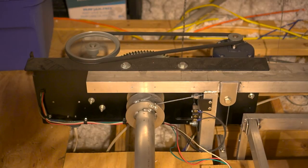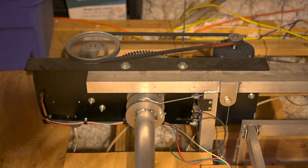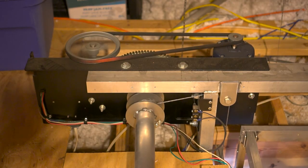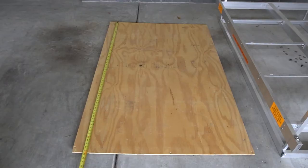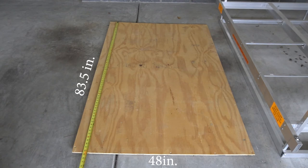Use the self-tapping screws to install the sheet metal covers and reinstall motor drive cover. Make a ceiling panel out of a quarter inch finished plywood. It should be cut to 83 and a half inches long and 48 inches wide.